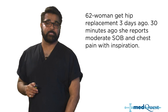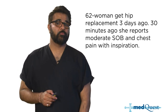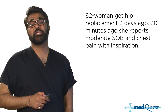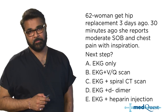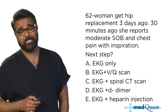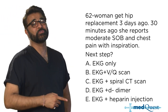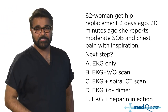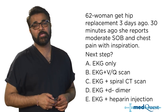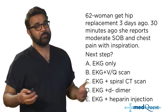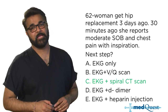A 62-year-old woman had a hip replacement three days ago and now reports moderate shortness of breath and inspiratory chest pain. The next step is an EKG, since EKGs dominate the answer choices. Given the acute onset of pain, tachypnea, and shortness of breath in a post-op high-risk patient, you are worried about PE — proceed with spiral CT.